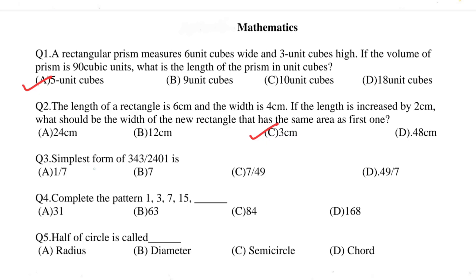Question 3: the simplest form of 343 divided by 2401 is? The correct option is option A, 1 by 7.